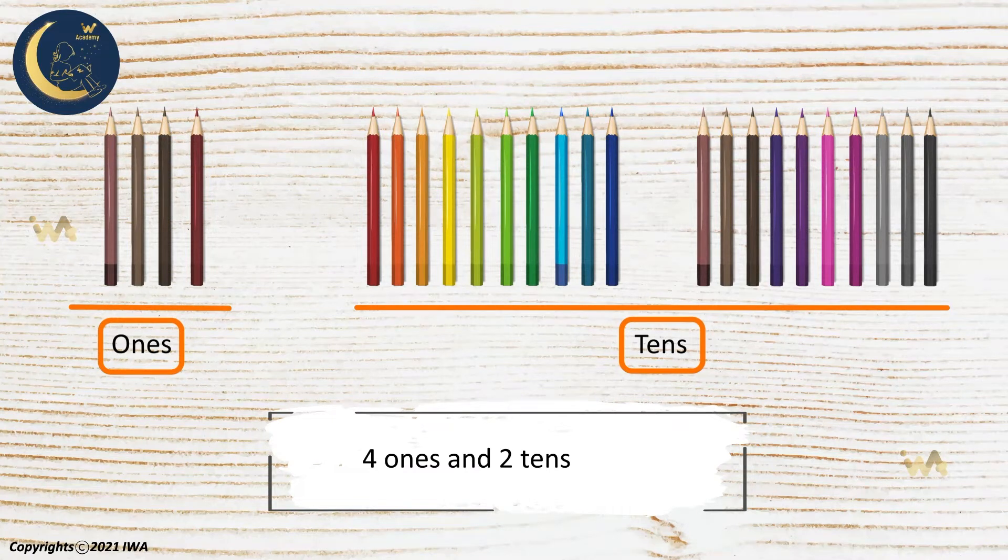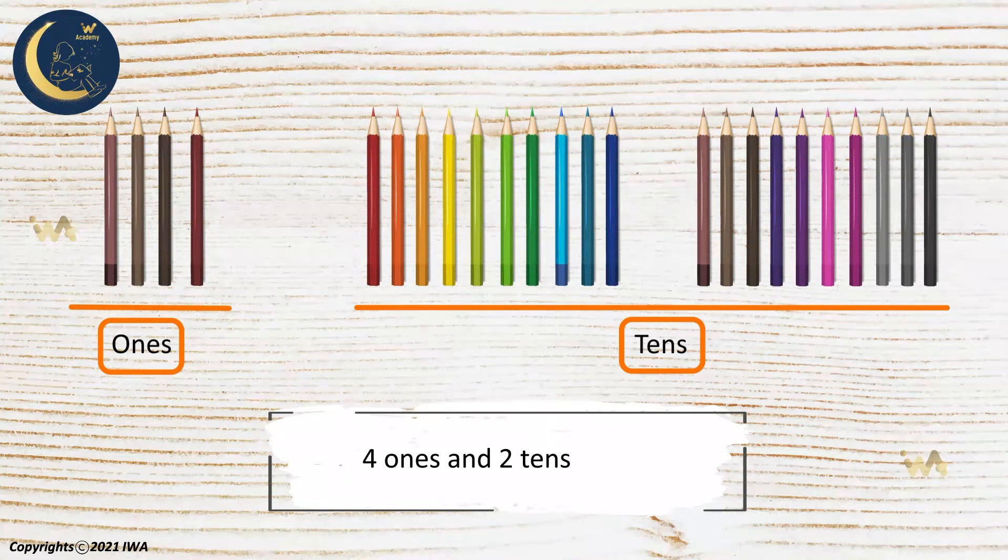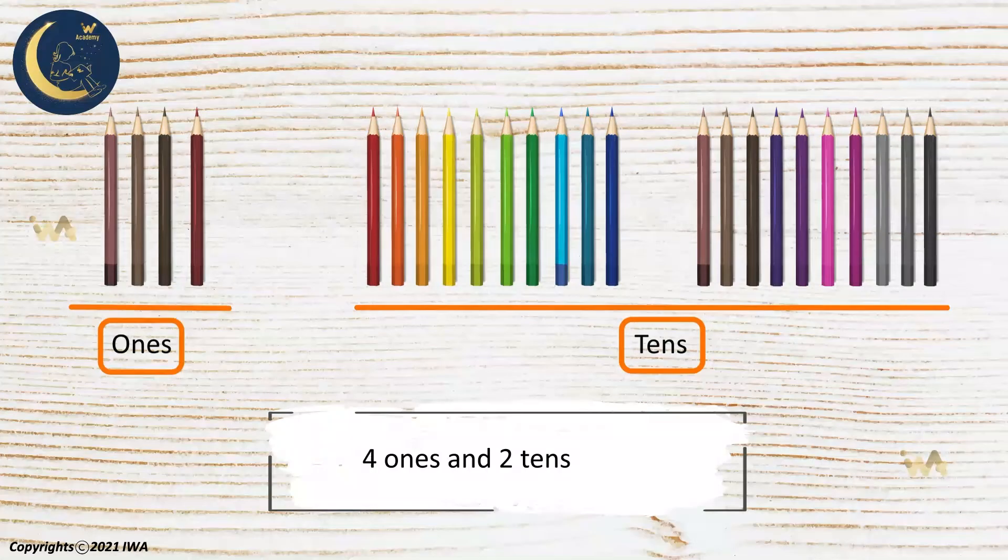To write the overall number of pencils, we will write the ones, then the tens. So the number 4, then the number 2. Now we can see that the overall number of pencils is 24.